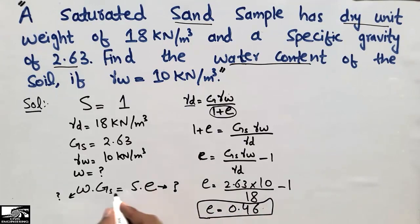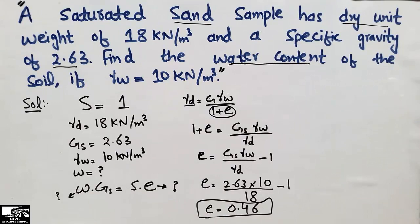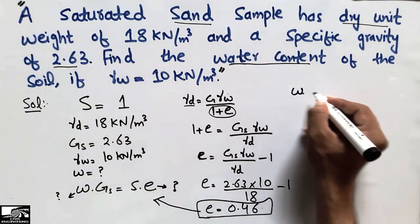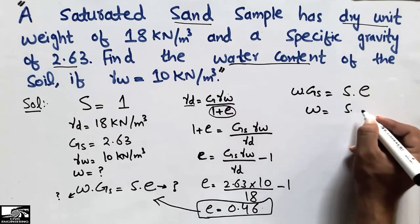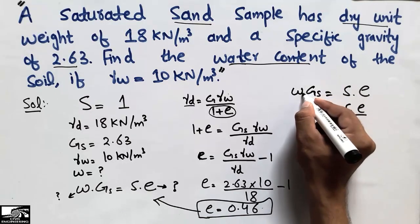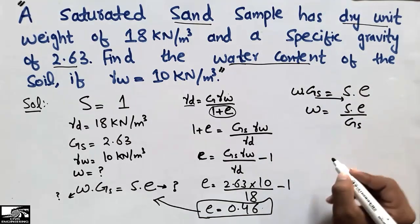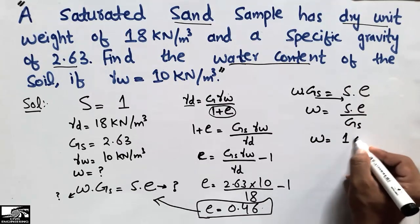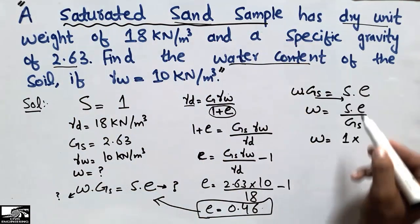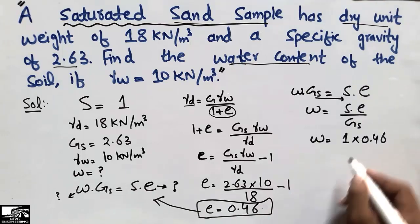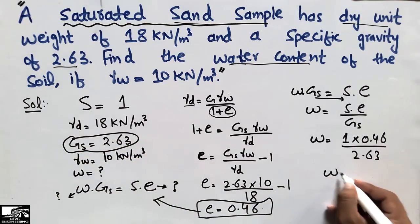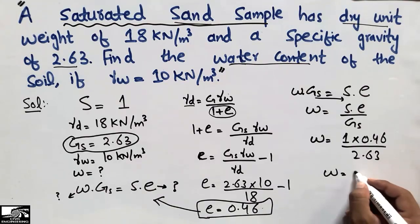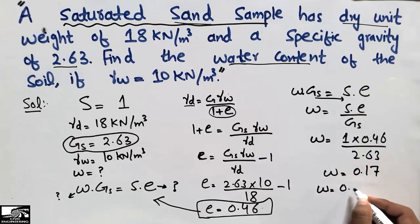Now substituting into w·Gs = S·e: the degree of saturation S = 1, e = 0.46, and Gs = 2.63. Solving for w: w = (S × e) / Gs = (1 × 0.46) / 2.63 = 0.17. Multiplying by 100 gives the water content as 17 percent.